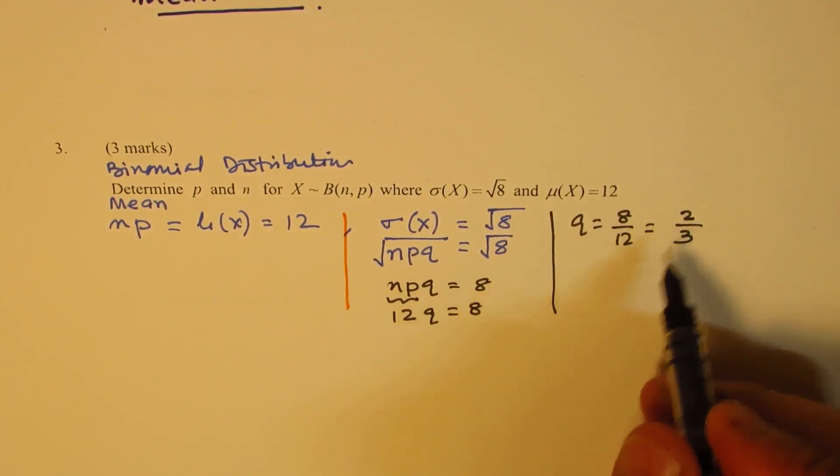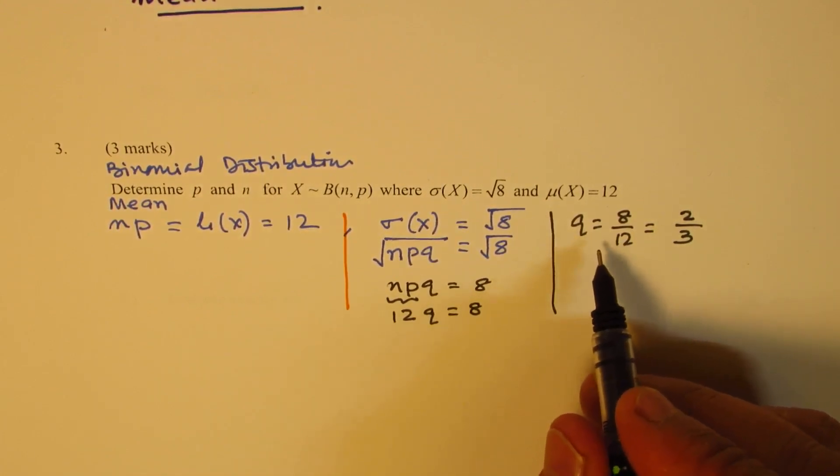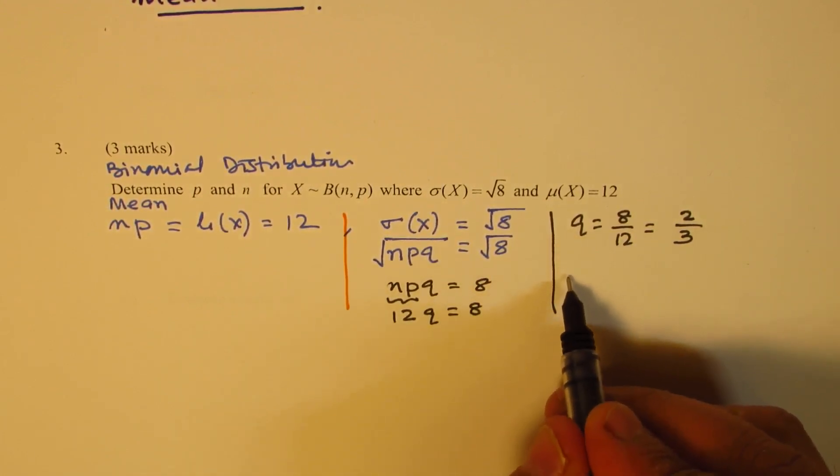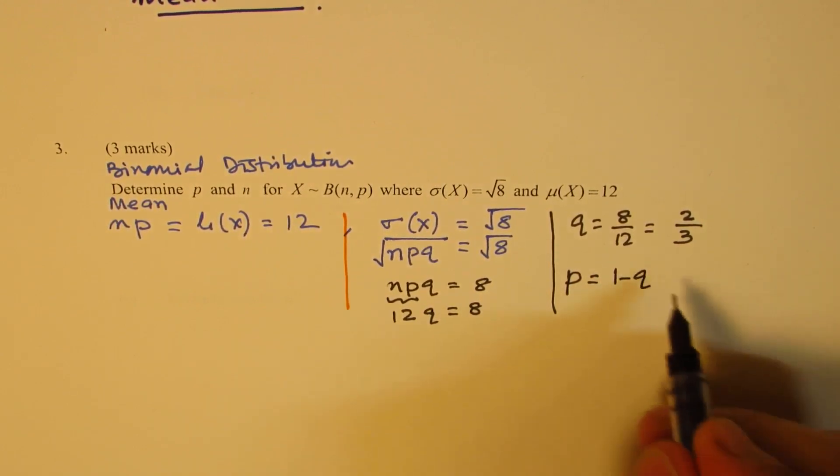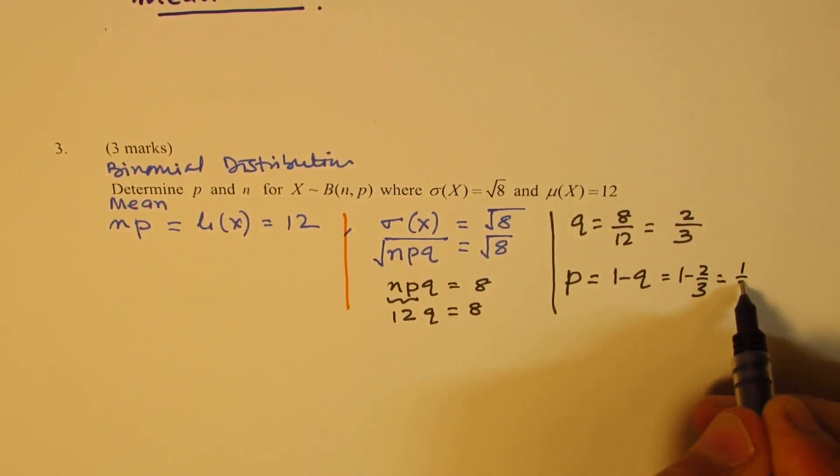That is the probability for failure. For success, the probability P will be 1 minus Q, so that should be 1 minus 2 over 3, which is 1 over 3. So we get our solution.